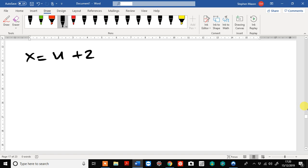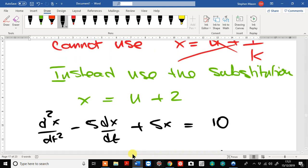And if we differentiate both sides of this equation, we get x dot equals u dot, and x double dot equals u double dot.